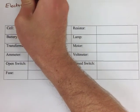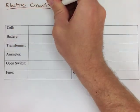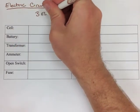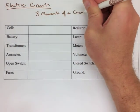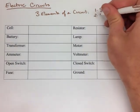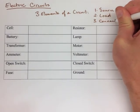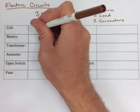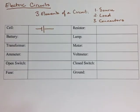When we're looking at electric circuits, there's really three elements of a circuit that we need to know about. The first being that there has to be a source that's providing energy, the second would be a load that's taking that energy, and the third is connectors that are connecting the source to the load.